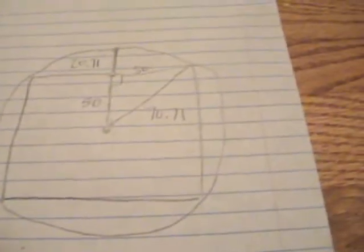So from here to here must be 70.71 minus 50, which is 20.71.